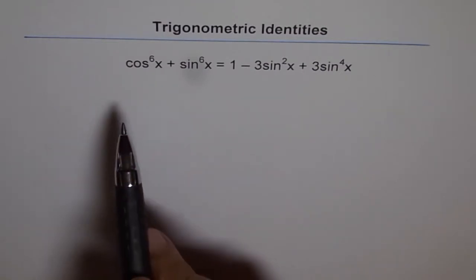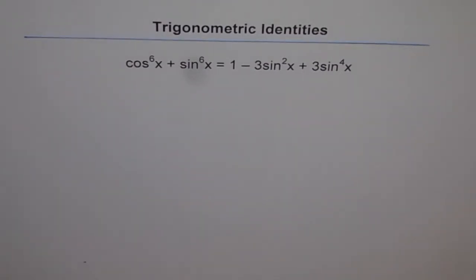Now here it is: cos to the power of 6x plus sin to the power of 6x equals to 1 minus 3 sin squared x plus 3 sin to the power of 4x.